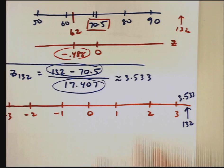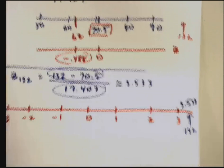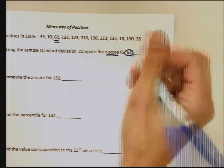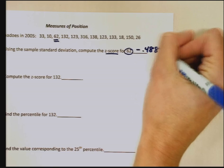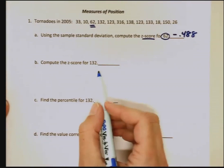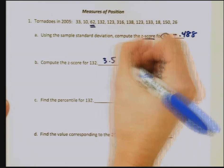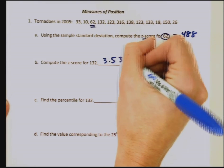Let me get back to my worksheet here. We'll fill in what we've got so far. Part A, 62 was less than that mean and it had a z-score of negative 0.488. Part B, 132 was greater than the mean and it had a relatively big z-score of 3.533.